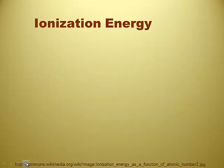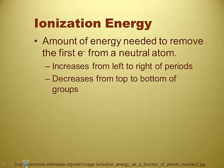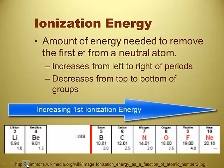So the very first trend we are going to talk about is ionization energy. Ionization energy is the amount of energy it takes to remove an electron from a gaseous atom. The trend is that ionization energy increases from left to right, so it gets tougher to take away an electron as you go across the periodic table. Lithium's easier to take an electron away from than beryllium, and the hardest one in that period would be neon. The fewer electrons, the easier they give them up.